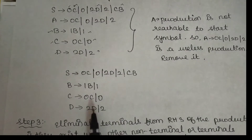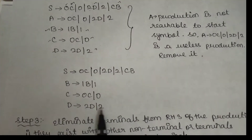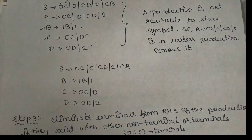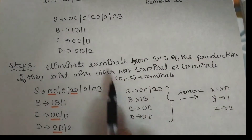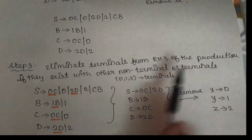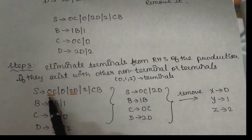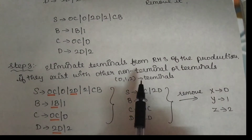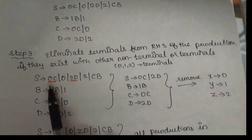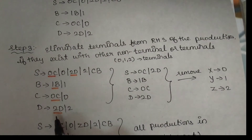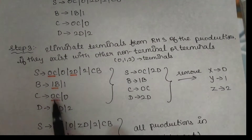You can remove unreachable symbols and simplify the grammar. Now, looking at the right-hand side of the productions, there are terminals mixed with non-terminal symbols. For Chomsky Normal Form, 0, 1, and 2 are terminals. Productions that have both terminals and non-terminals on the right-hand side are not in Chomsky Normal Form.